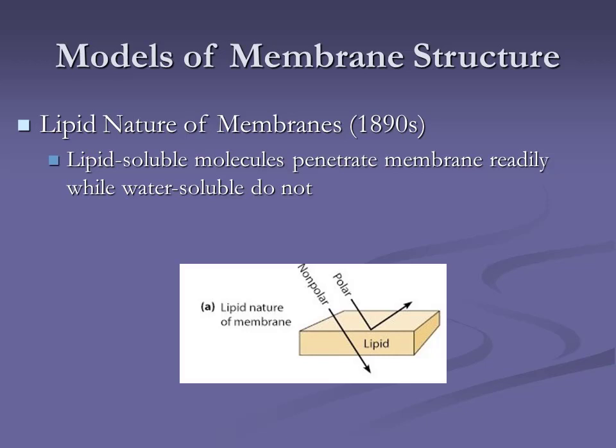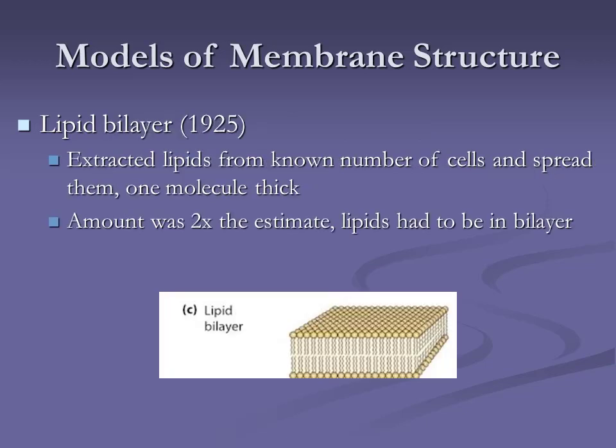In 1925, scientists said: these membranes are made out of phospholipids. So let's extract the phospholipids and weigh them. They ended up with twice as many as they expected. How? Lipid bilayer — 1925. They realized there must be two of these layers, arranged like an Oreo cookie. Then in the 1950s, using an electron microscope, they found three lines when looking at the cell membrane.